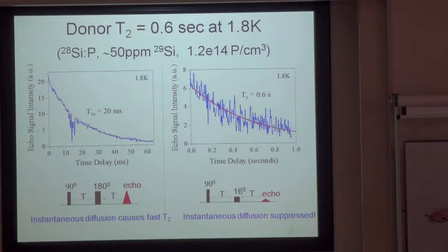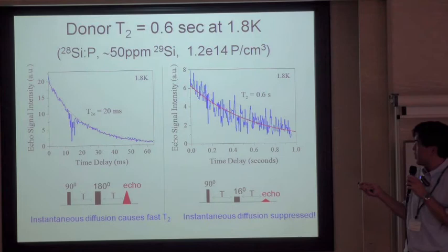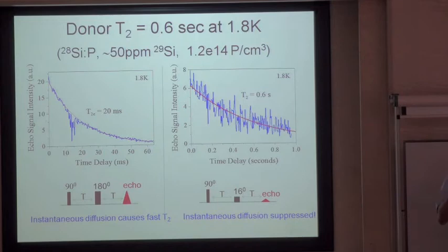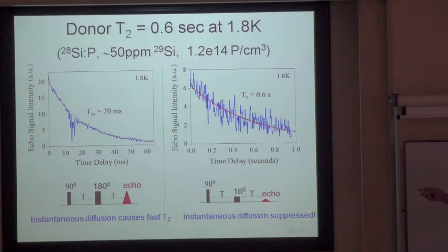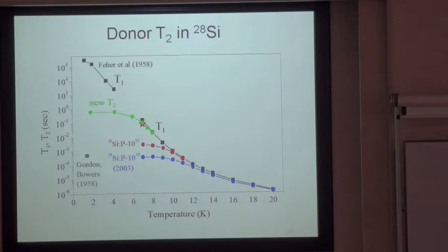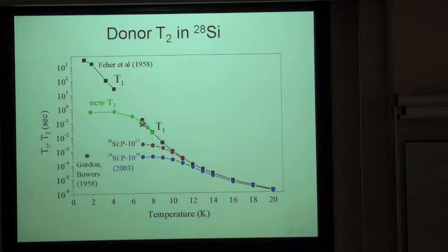More recently, we have been able to prepare bulk silicon composed of only 50 ppm of 29Si — that is 0.005% — successfully suppressing the background nuclear spin to this level. With spin echo measurements, we obtained T2 of 0.6 seconds at 1.8 Kelvin. At 2 to 4 Kelvin, the T2 time is close to one second, nicely following the T1 limit.